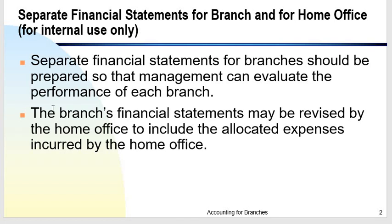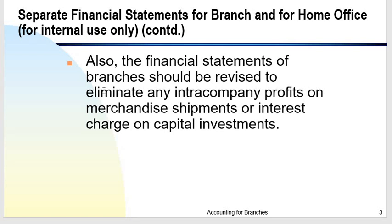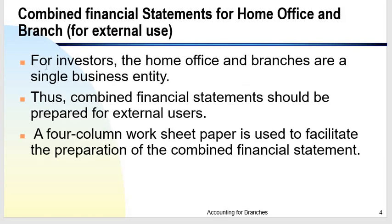The branch financial statements may be revised with the home office to include expenses incurred by the home office on behalf of the branch. Also, the financial statements of the branches should be revised to eliminate intercompany profits on merchandise — specifically when there are merchandise shipments from the home office to the branch made above cost. Any intercompany interest income and interest expense should also be eliminated for combination purposes.